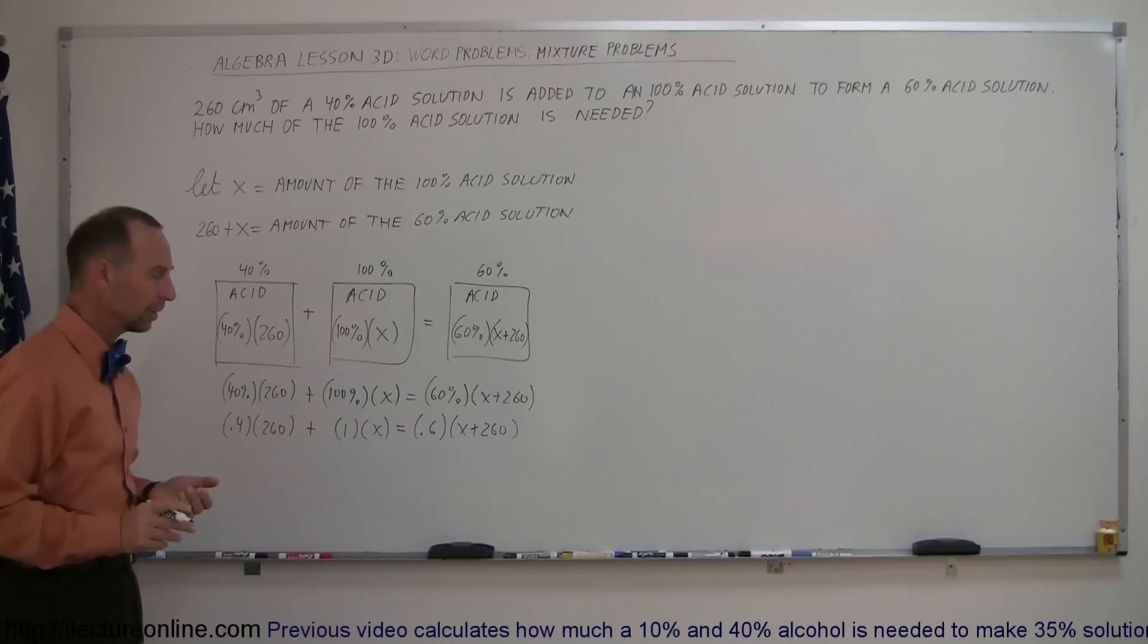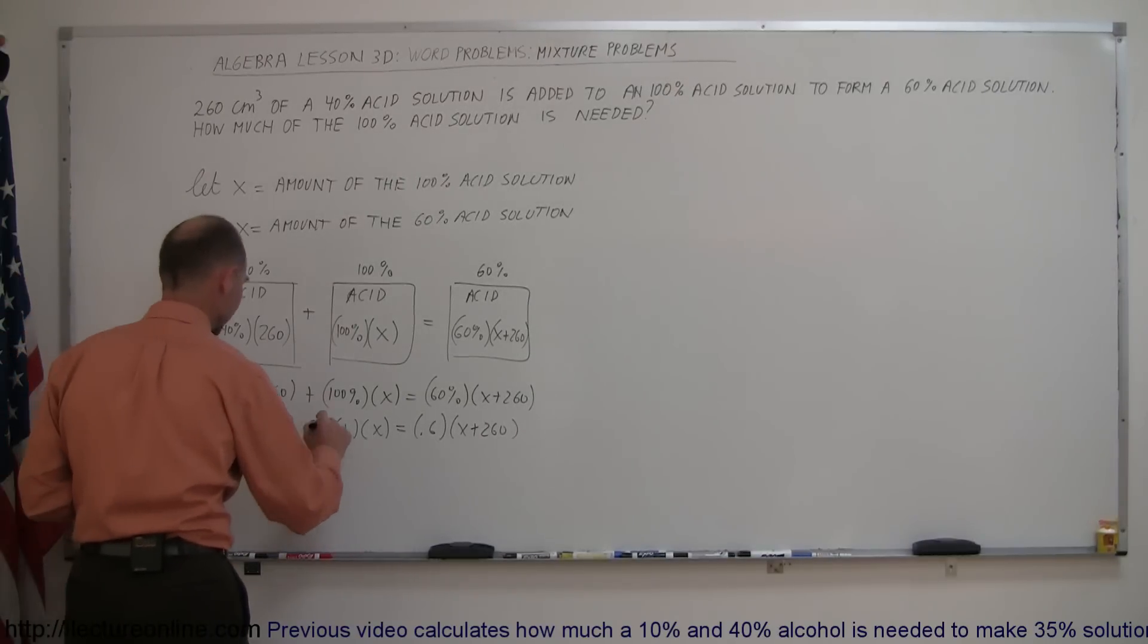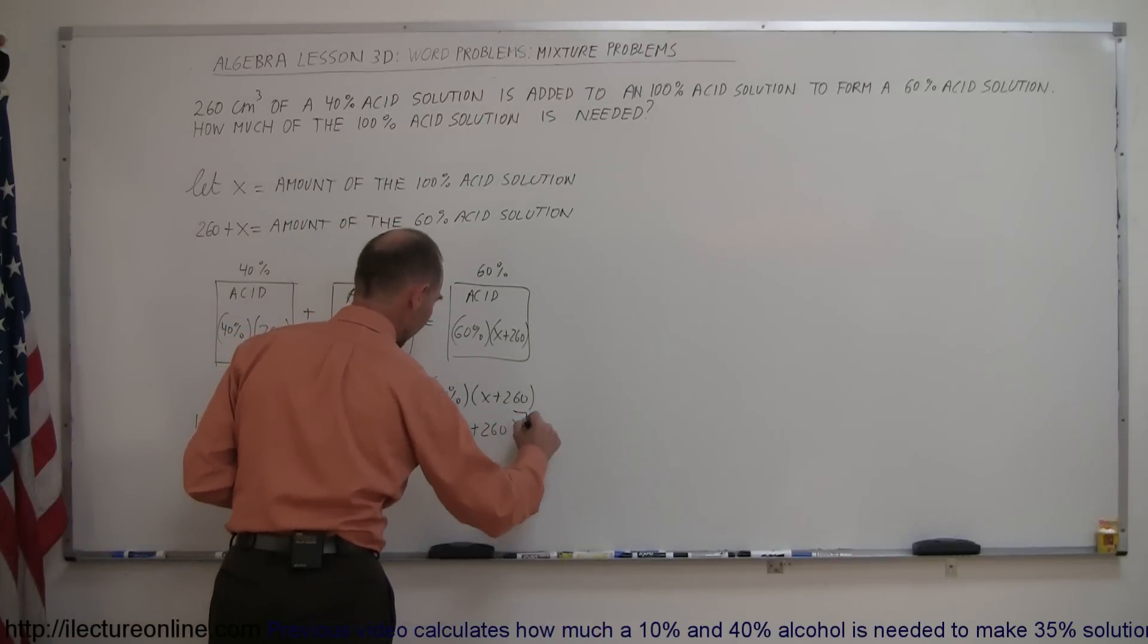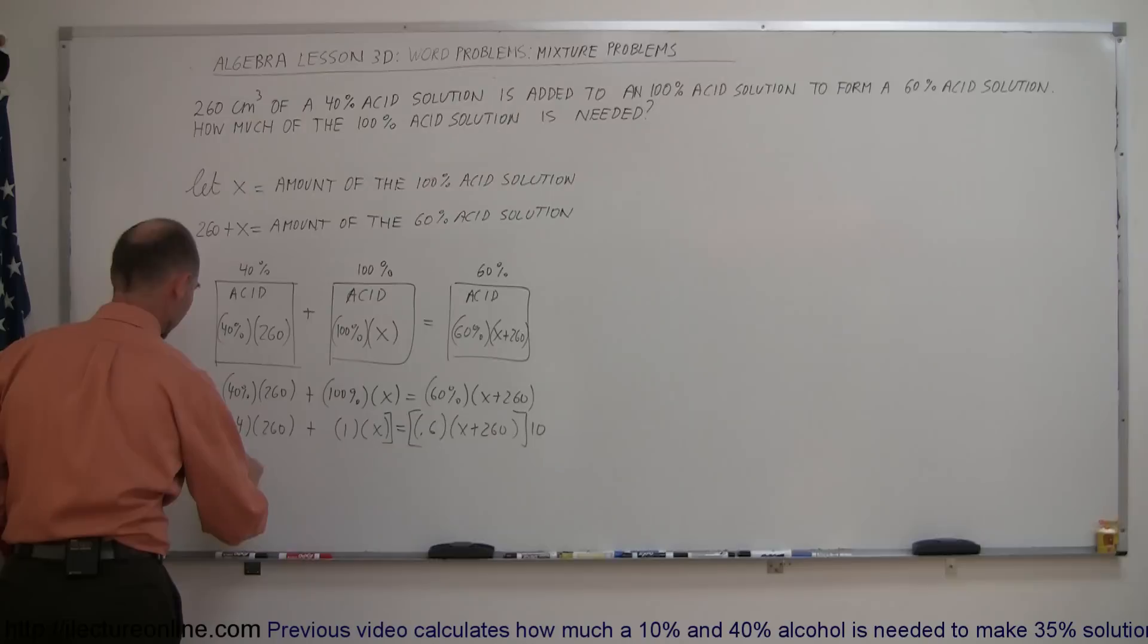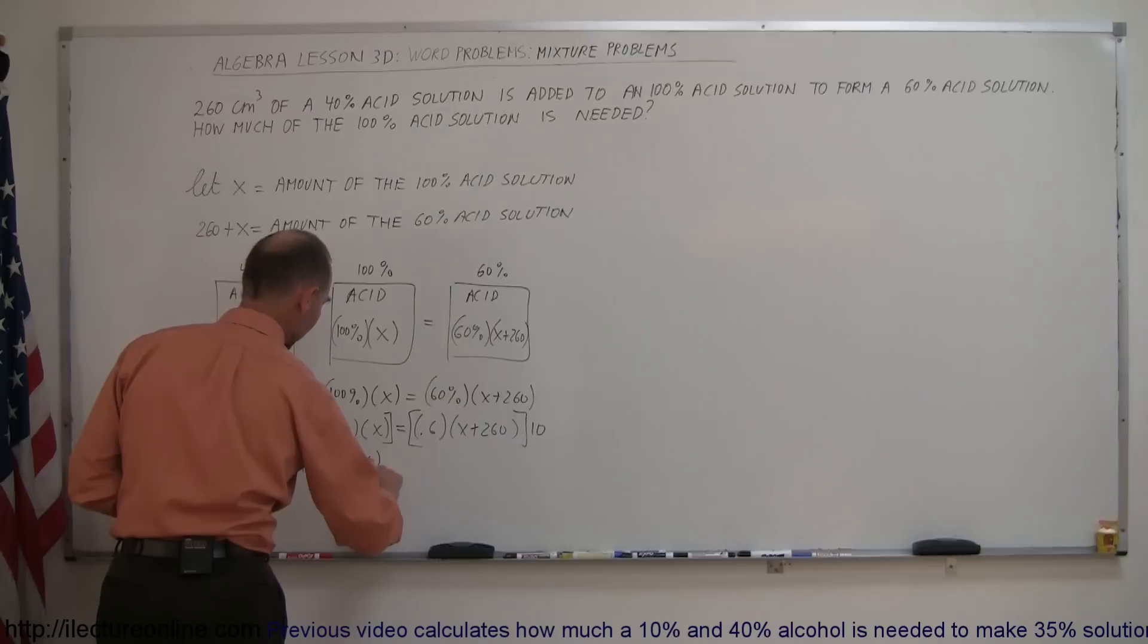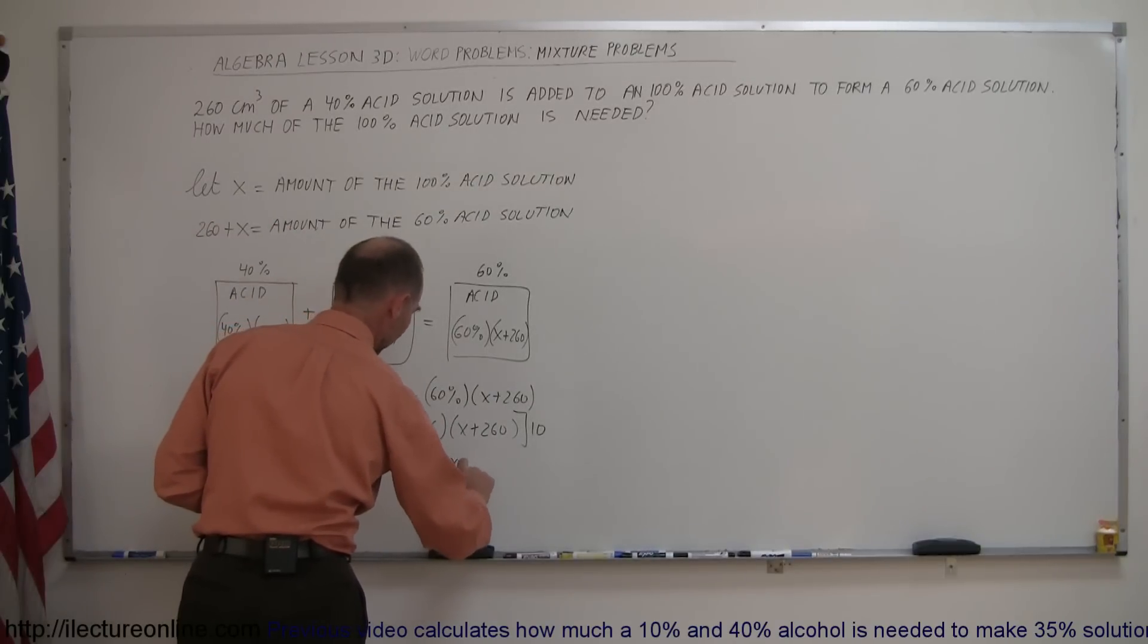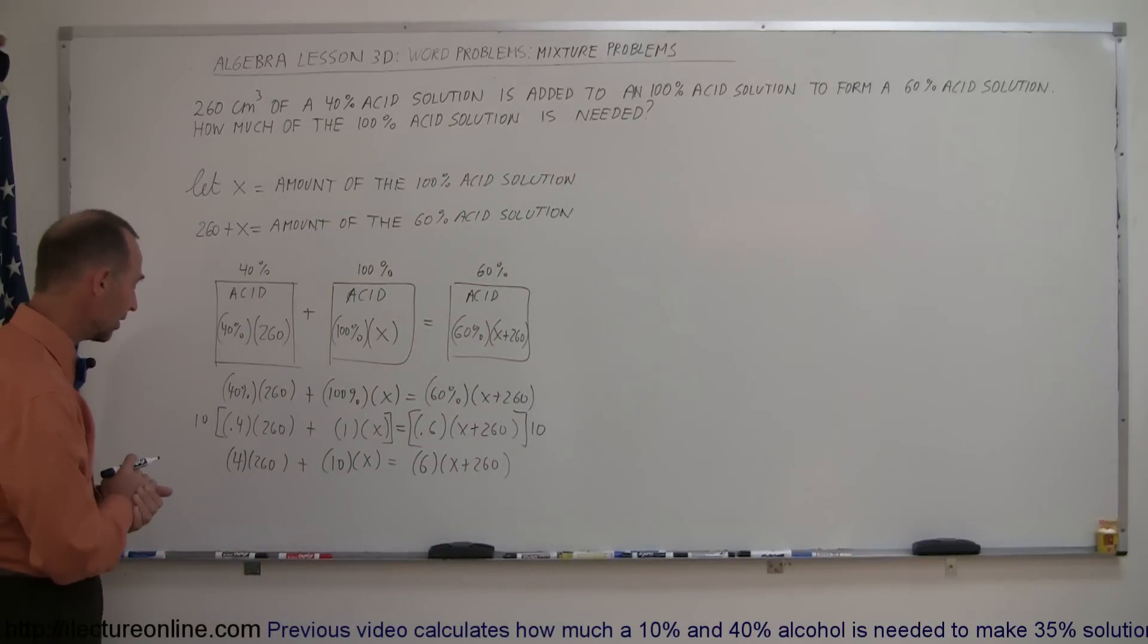And now, to get rid of the decimal places, we can multiply both sides of the equation by 10, that should do it. So multiply the left side by 10, multiply the right side by 10, so 10 times 0.4 is 4, so 4 times 260, plus 10 times 1 is 10, times X, equals 10 times 0.6, which is 6, times X plus 260.